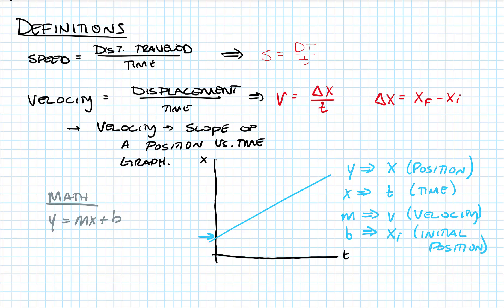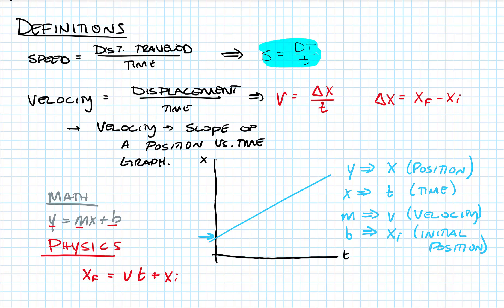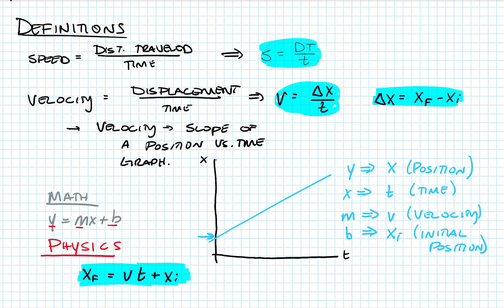From this graph we can get a physics equation. Moving beyond the math, each term has a physical definition: the final position equals velocity times time plus the initial position. So the formulas we'll use in this unit are: speed = distance/time; velocity = displacement/time; Δx = x_final − x_initial; and x_final = velocity × time + x_initial.